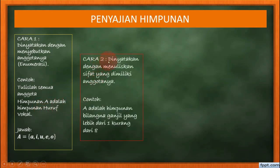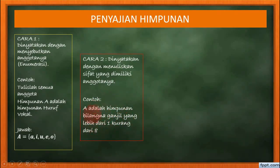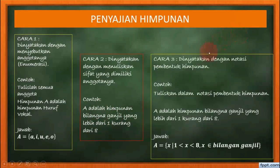Kemudian, dinyatakan dengan menuliskan sifat yang dimiliki anggotanya, atau dalam kalimat. Ada yang menyebutkannya dinyatakan dalam sebuah kalimat. Contohnya: A adalah himpunan bilangan ganjil yang lebih dari 1 kurang dari 8. Ini disebutkan secara kalimat, kalau yang sebelumnya secara menulis anggotanya.